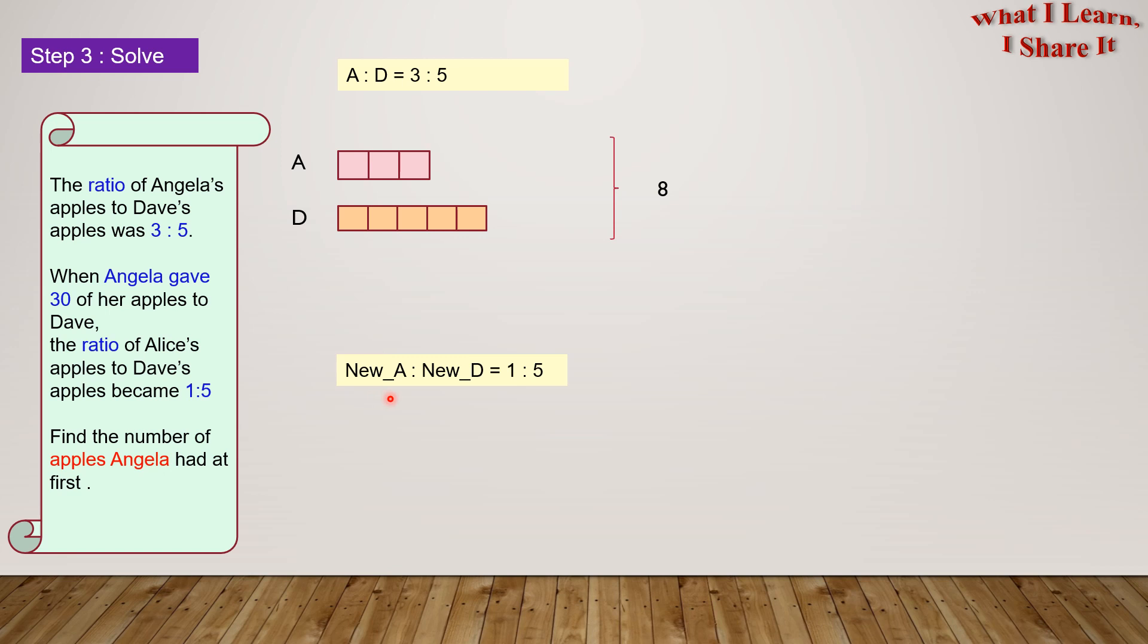New A is to new D equals 1 is to 5. What this means is for 1 unit of new A, new D will have 5 units. The total units in this ratio, 1 is to 5, are 6.